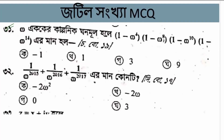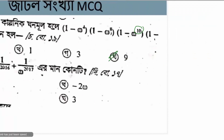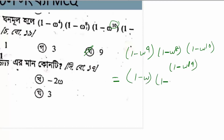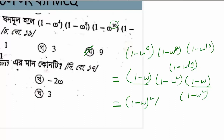For the expression 1 minus omega to the power 4, times 1 minus omega to the power 8, divided by 1 minus omega to the power 10, equal to 9. Working with 4, 8, 10: you get the result of 9. So the expression involving 1 minus omega to the power 4, times 1 minus omega to the power 8 gives us that result.